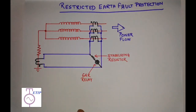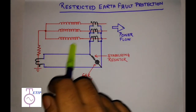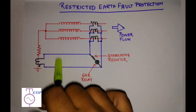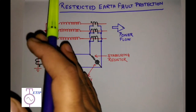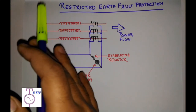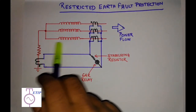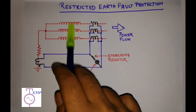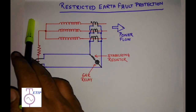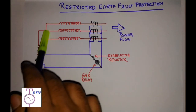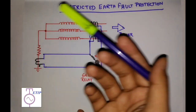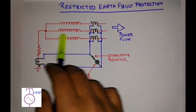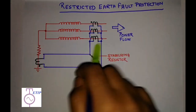Restricted earth fault protection is generally applicable in star connected systems, like the star connected secondary of a transformer or a star connected generator. That is why I have drawn only the star connected side. If this is a transformer, there will be a primary side which may be star or delta; if this is a generator, the system will look like this.